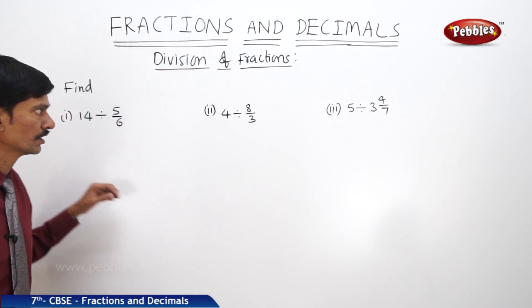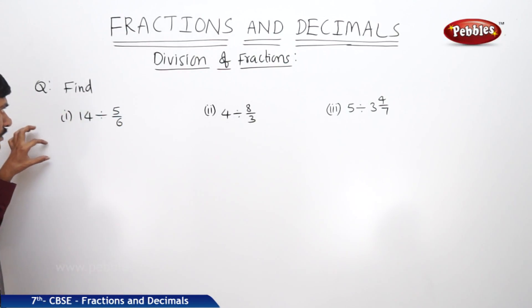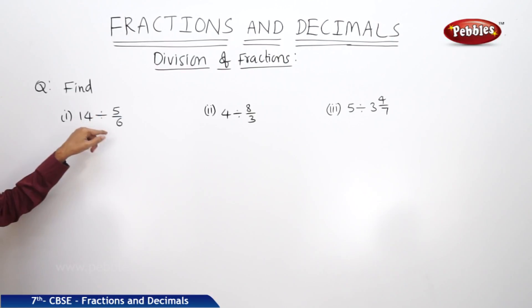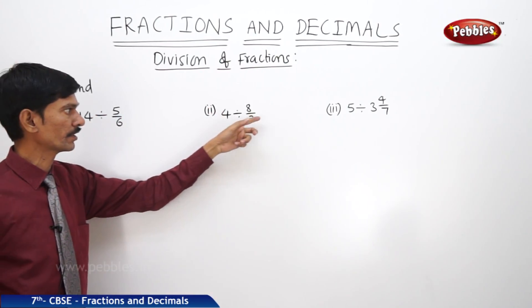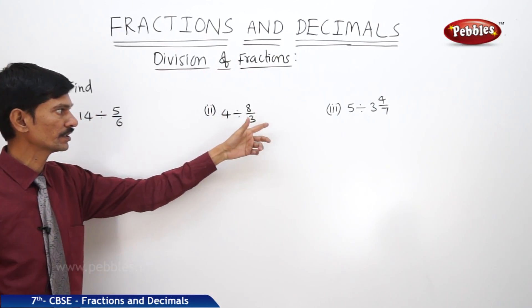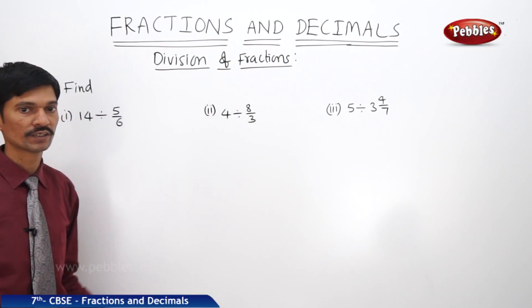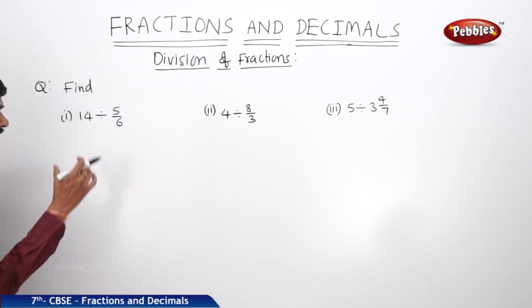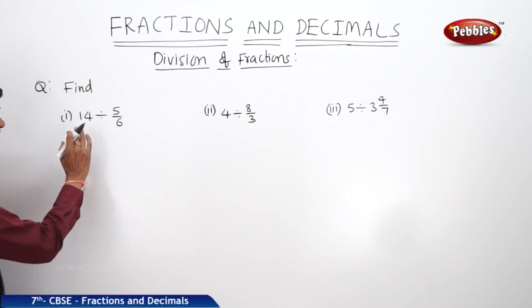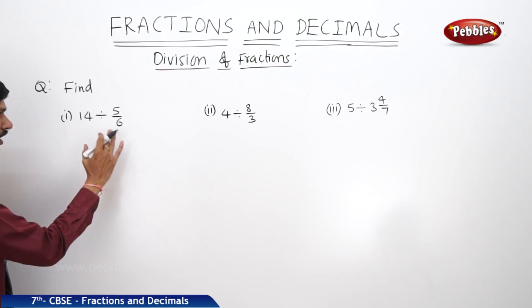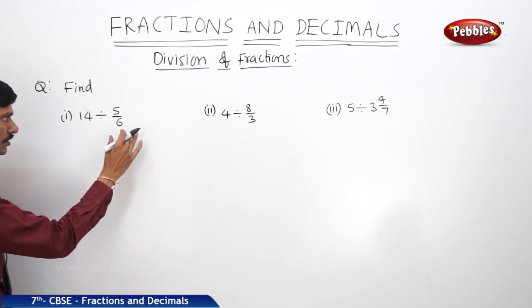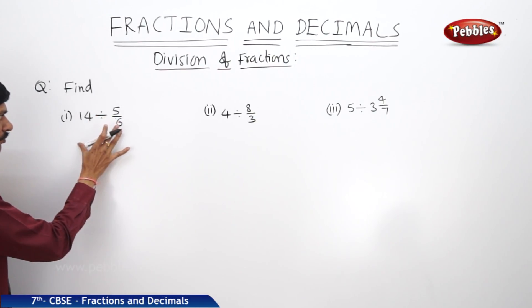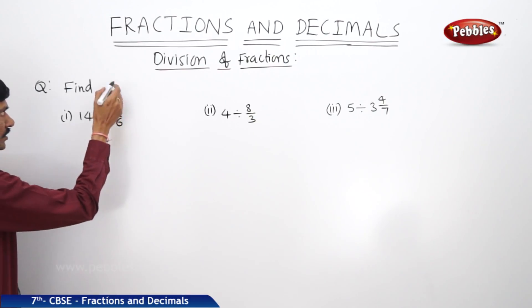Now let us solve the next question. Find 14 divided by 5/6, 4 divided by 8/3, and 5 divided by 3⁴⁄₇. If you observe all these divisions, in each case a whole number is divided by a fraction. So this is the case where we divide a whole number by a fraction.